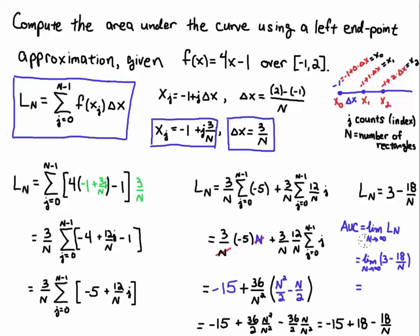So the area under the curve is given by the limit as n goes to infinity. So here, this limit just means we're increasing the number of rectangles to infinity. And now that if I evaluate this limit, ln is 3 minus 18 over n. I'll substitute that in over here. Now, the limit as n goes to infinity of 3 is simply going to be 3. And the limit as n goes to infinity of 18 over n is going to be 0. And that leaves us with an area under the curve of 3.